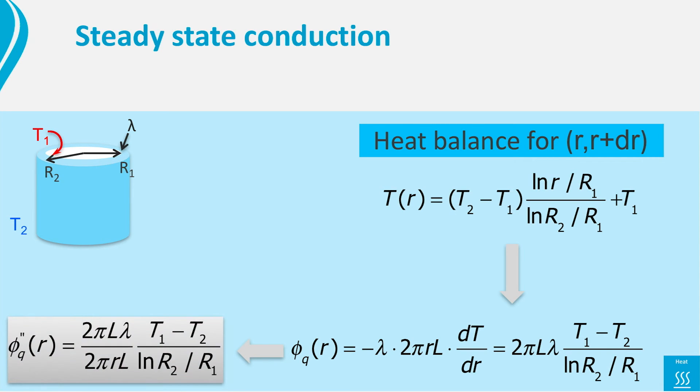The heat flux, that is the heat flow per unit area, can be found from this expression by dividing by the area that the heat flows through. The area does depend on the radial coordinate. It is 2πrl. And thus, the heat flux is inversely proportional to the radius.